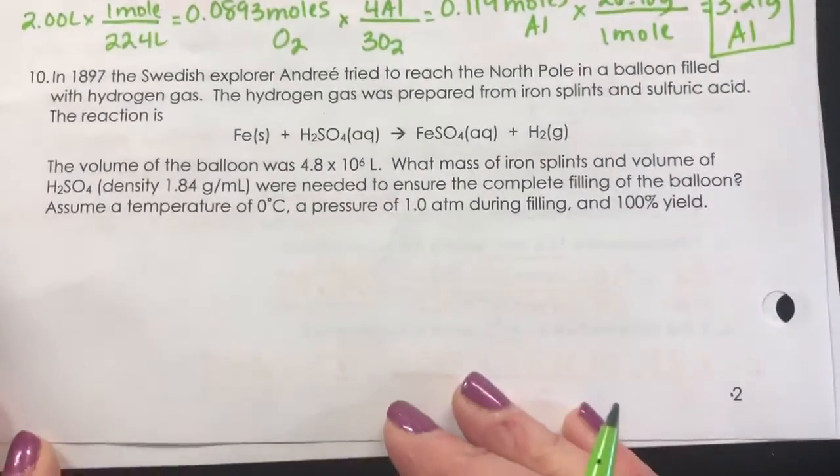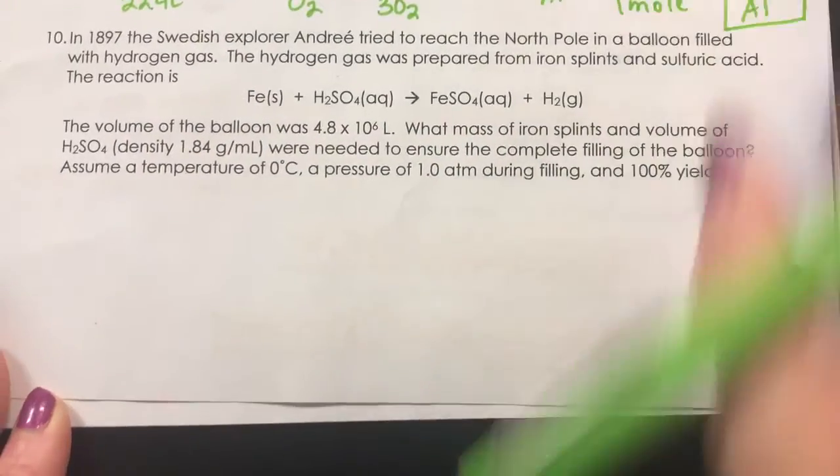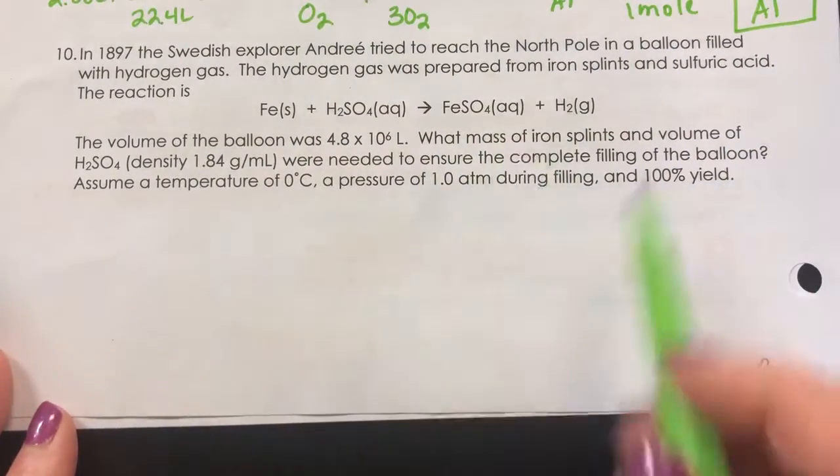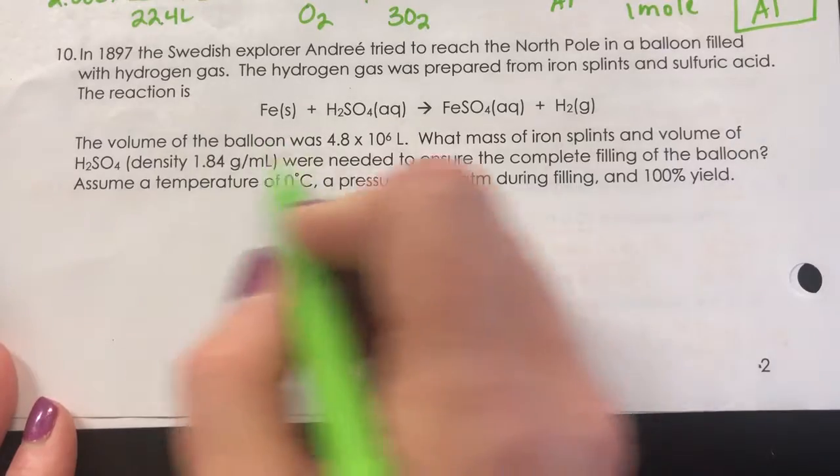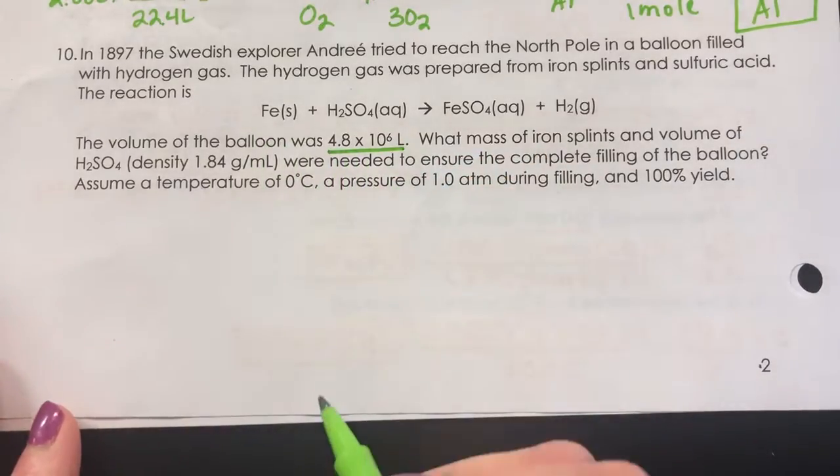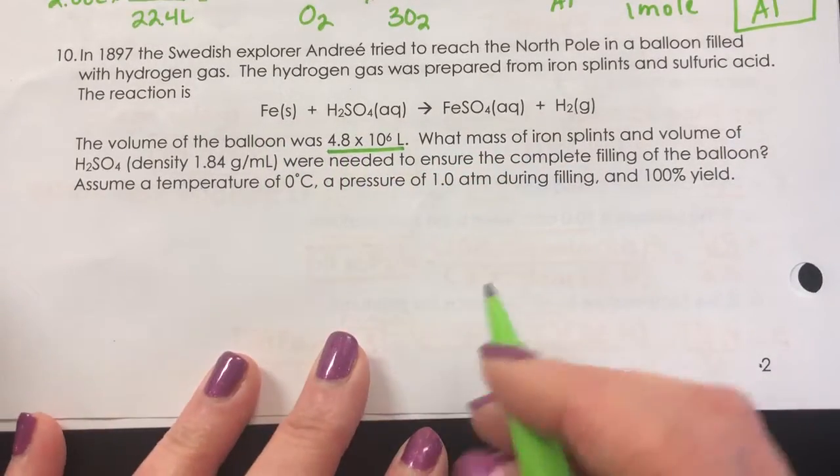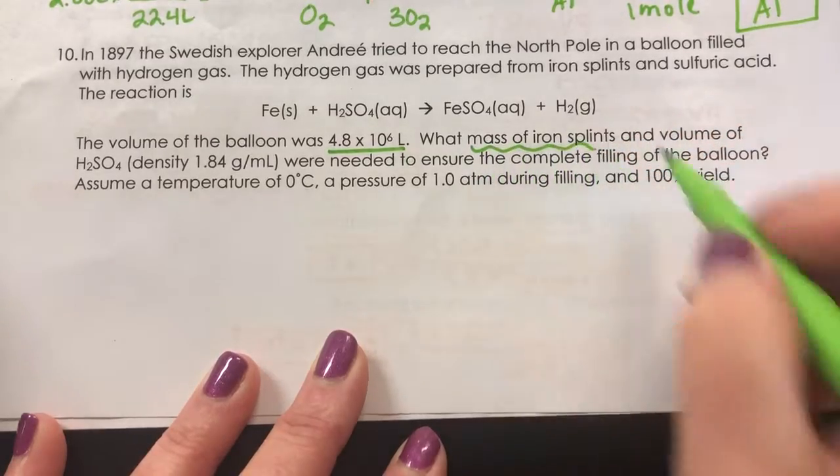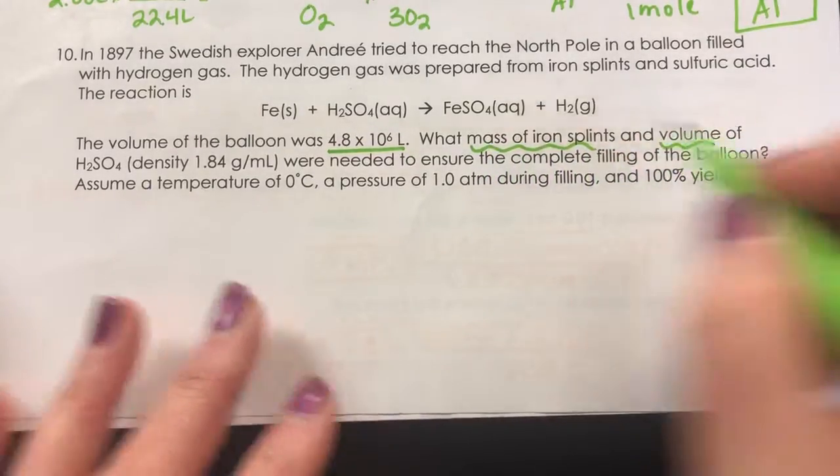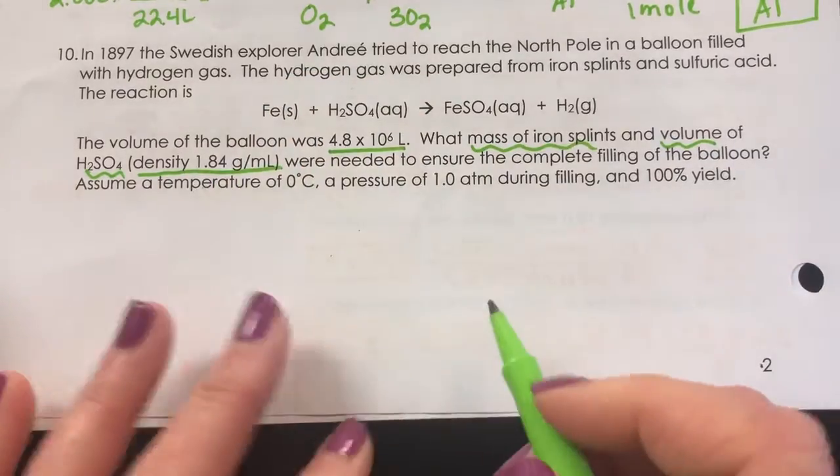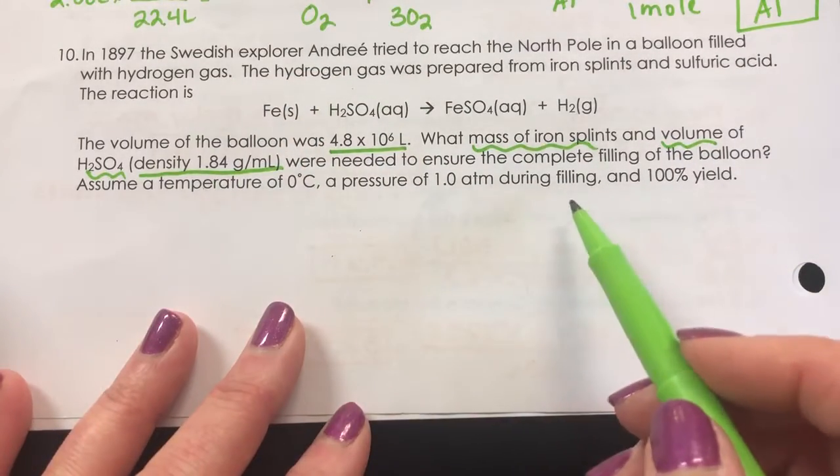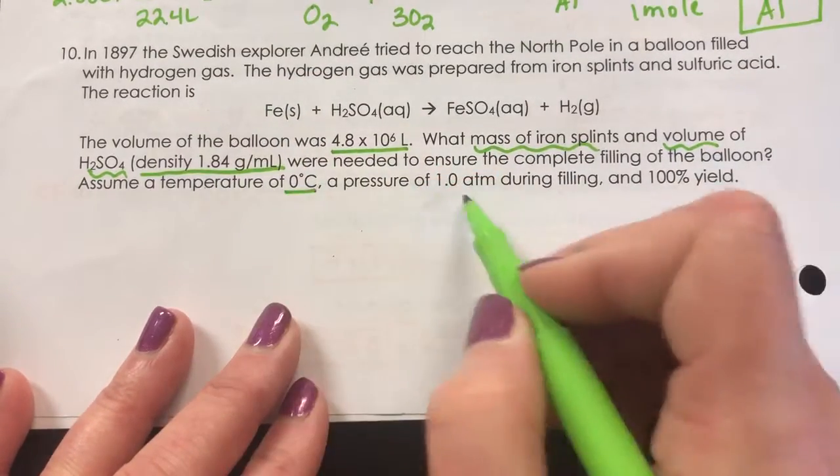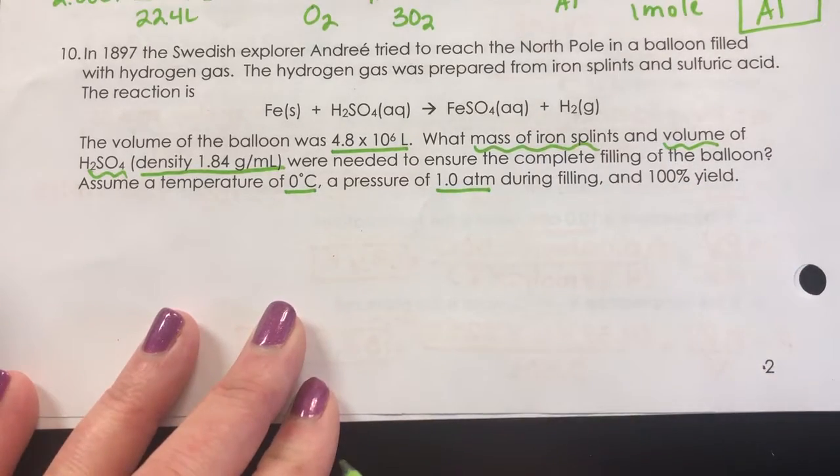Number 10. Let's slide that up a bit. We have some background about a balloon. We have that the volume of the balloon was 4.8 times 10 to the 6 liters. What mass of iron and what volume of sulfuric acid were needed to ensure complete filling of the balloon at 0 degrees Celsius and 1 atm?